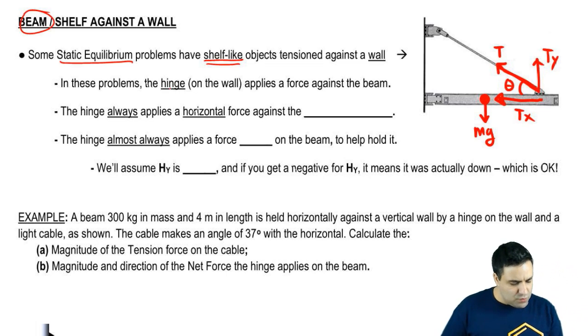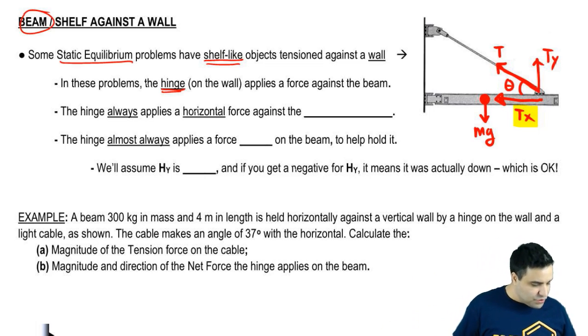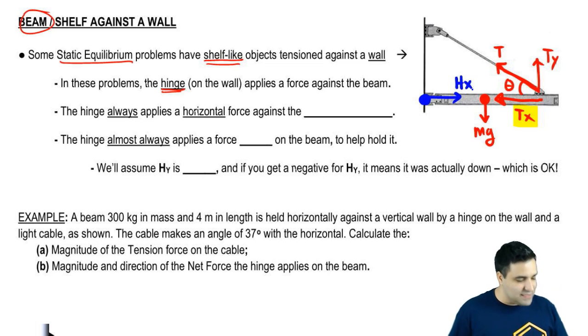Now, in these problems, we're going to have the hinge apply a force against the beam. Notice how there's a Tx to the left. These are equilibrium questions. All forces have to cancel on the X and the Y. All torques have to cancel. So if there's a force to the left, there has to be a force to the right. And that's where the hinge comes in with a force on the right.